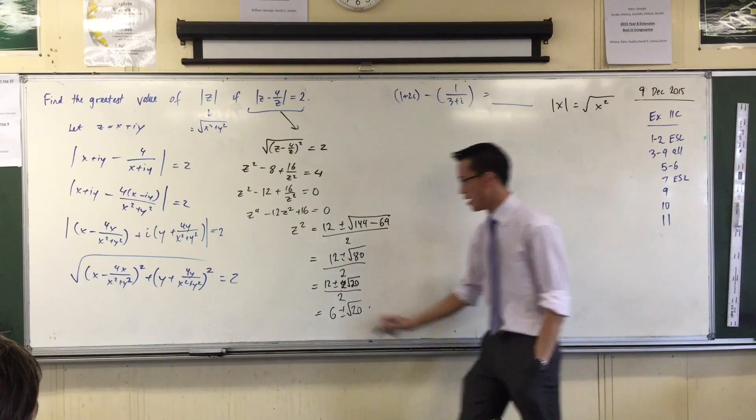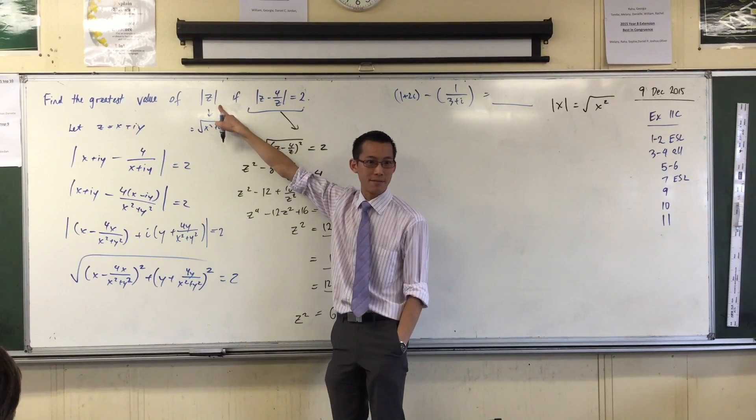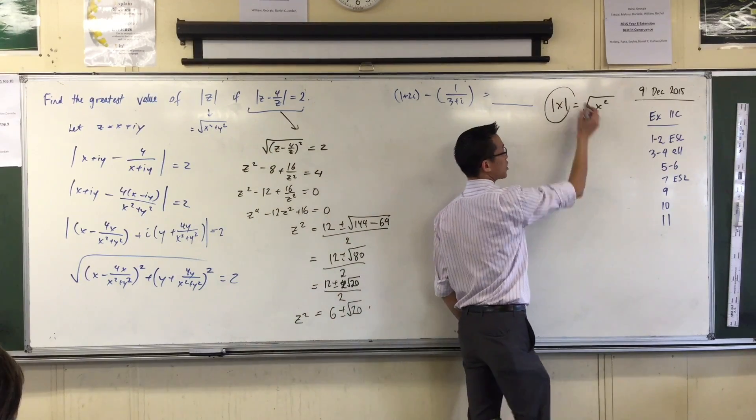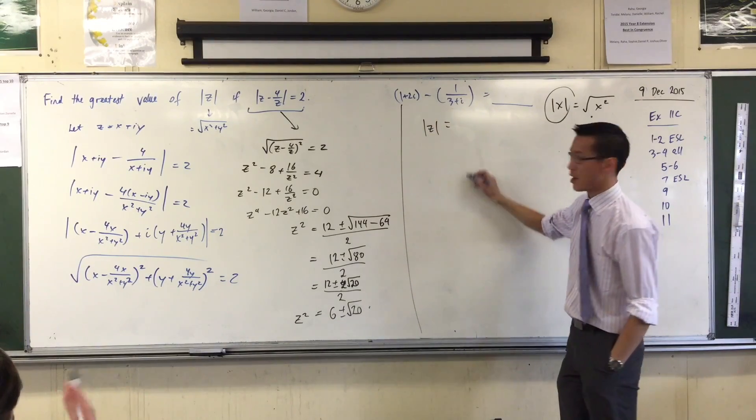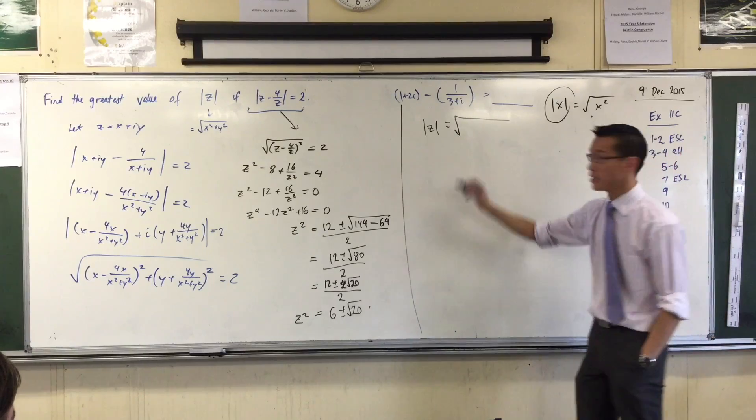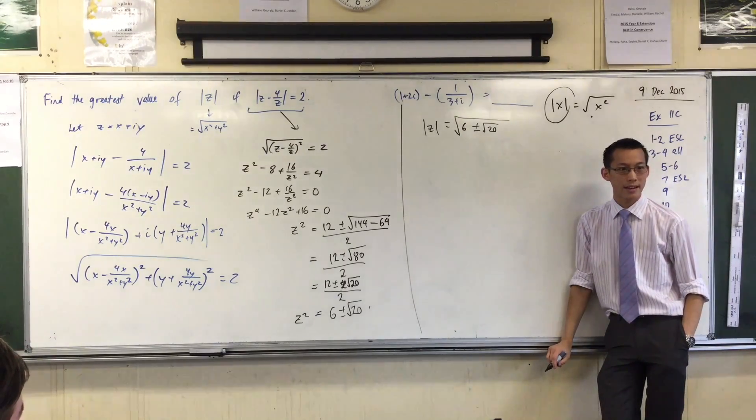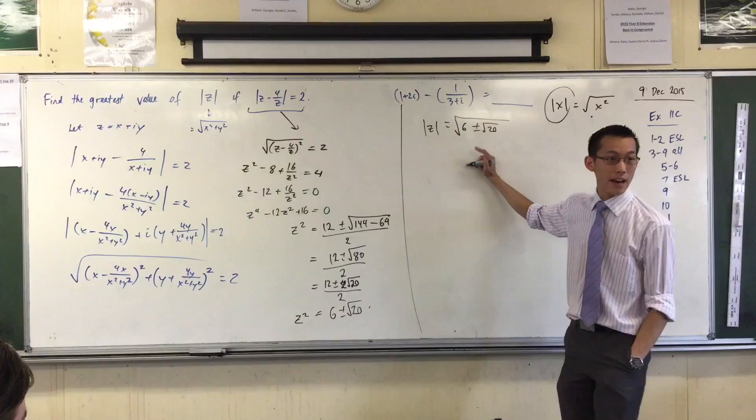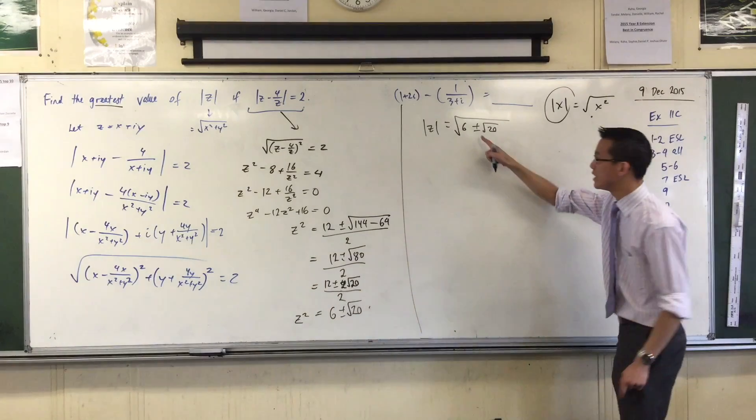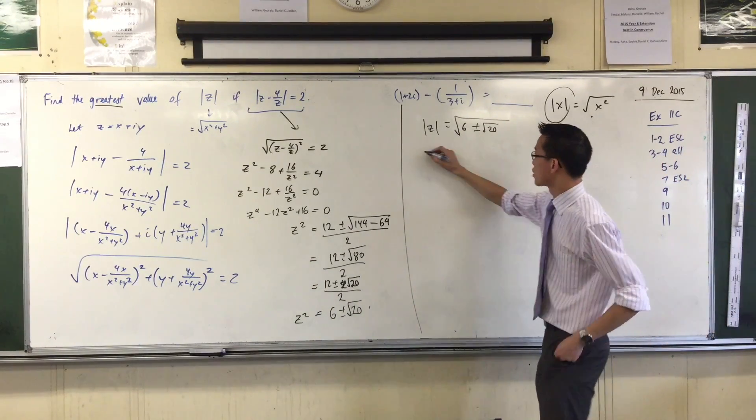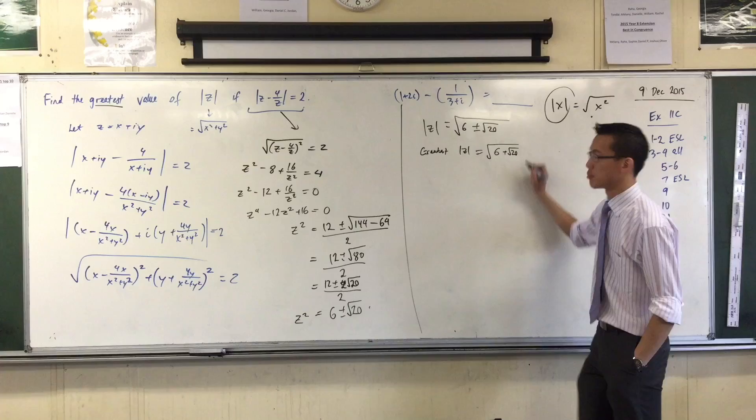That gives me 6 plus or minus root 20. Okay, what is this? This is z², right? I don't want z². I want mod z. But thankfully, mod z is the square root of z², right? So therefore, mod z equals the square root of (6 plus or minus the square root of 20). Okay, hold on. What have I just established? I've got two values here. What do I want? Which value did I want? I want the greatest value, right? So therefore, I don't really need to worry about the negative case because I know that's going to be smaller. So therefore, the greatest value for mod z is going to be the square root of (6 plus root 20).